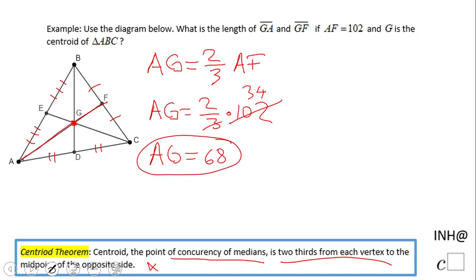And GF, how do we find GF? GF, if you notice, is this leftover. So we can do GF equals AF minus AG. This is one way to do it, and that will be 102 minus 68, and that will be 34.